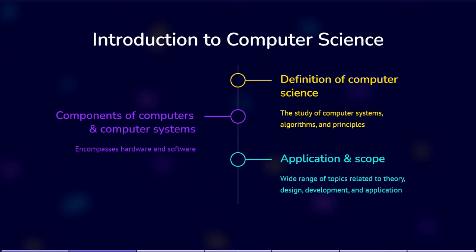Computer science is the study of computers, their systems, and the algorithms and principles that govern them. It is hardware and software working together. Computer science encompasses a wide range of topics related to the theory, design, development, and application of computer systems and programs.